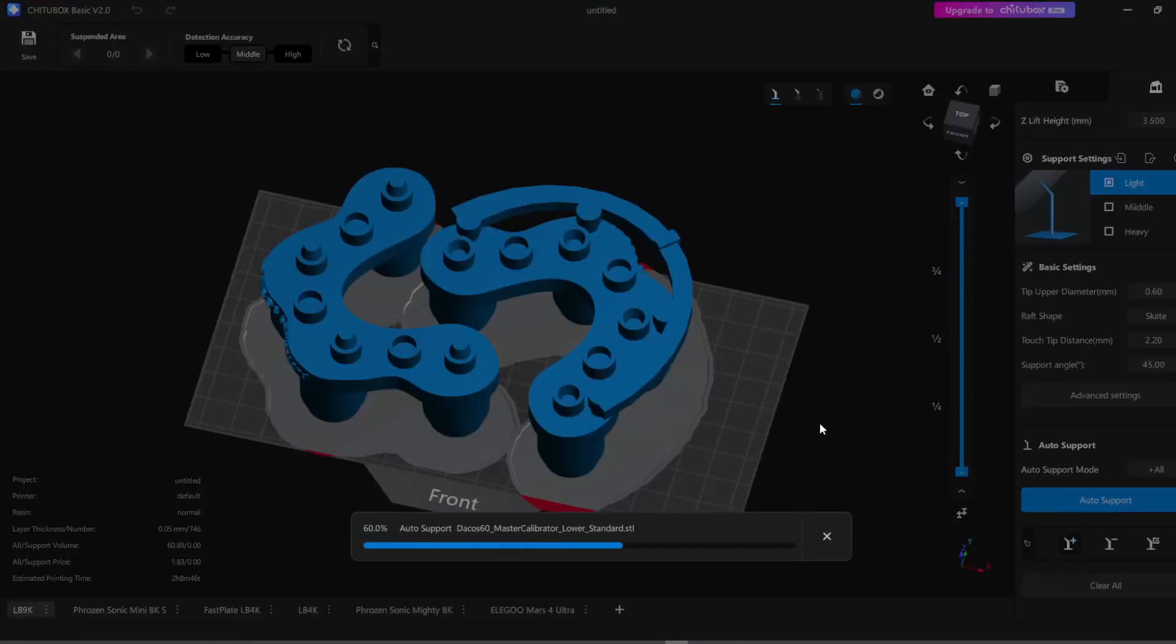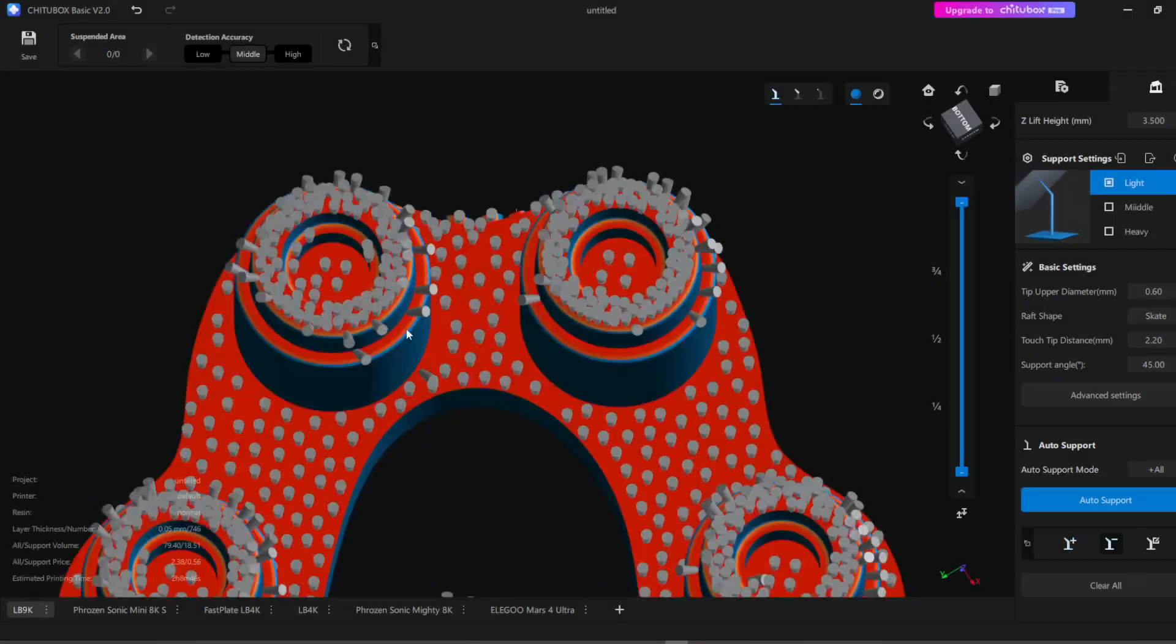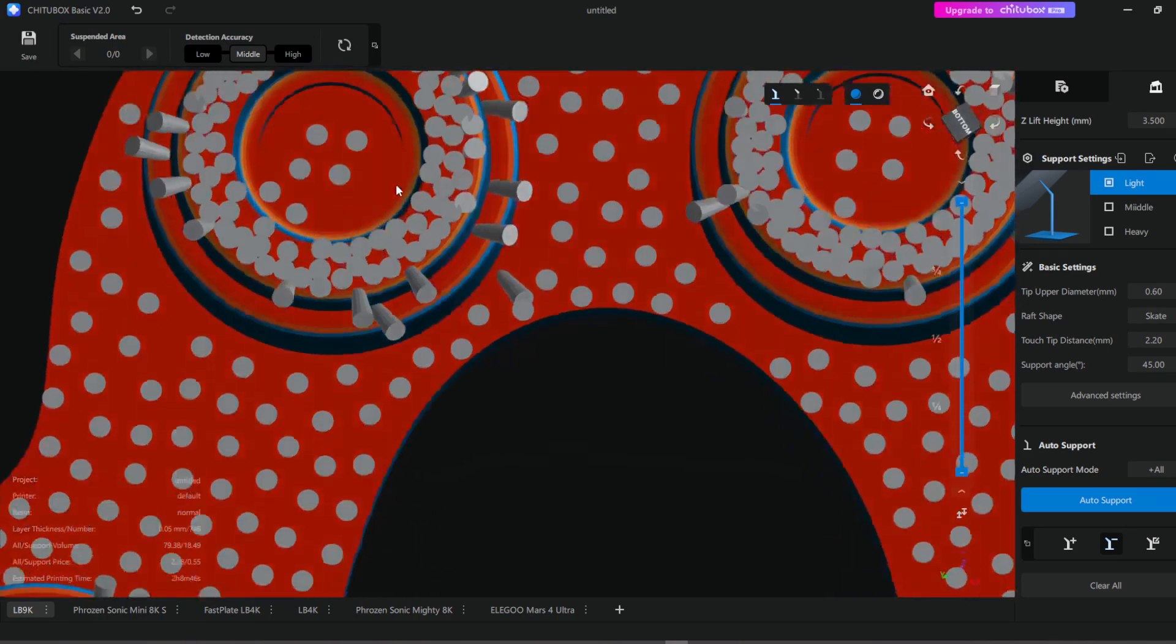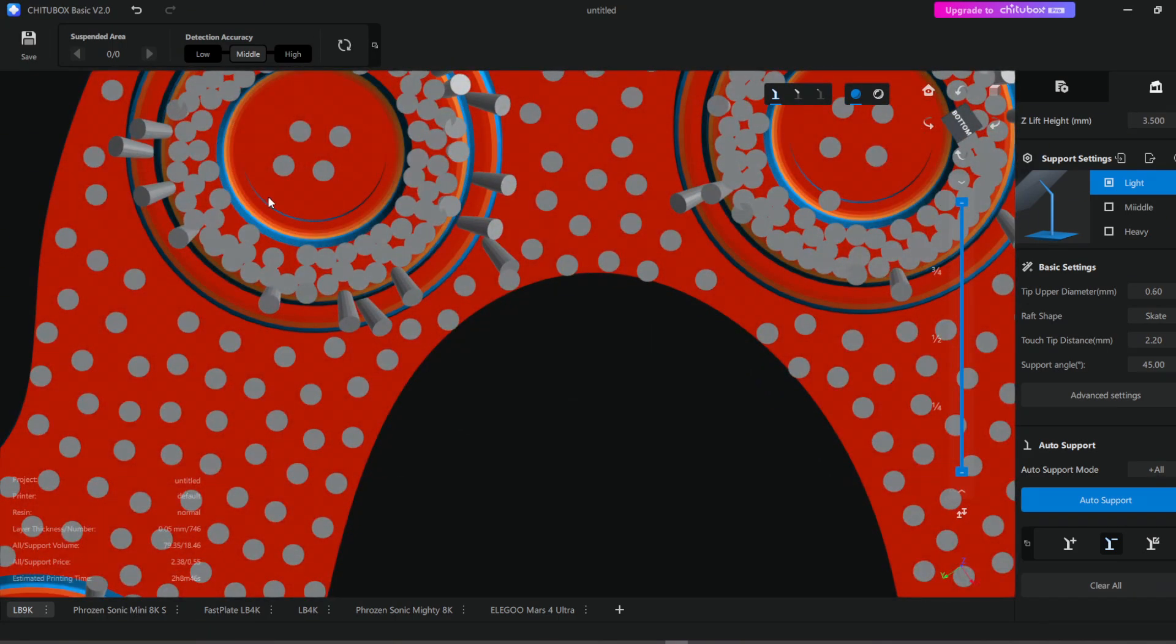Once both the upper and lower calibrators are positioned correctly, proceed with automatic support generation. After generating the supports, carefully check that there are no supports on the edge areas.